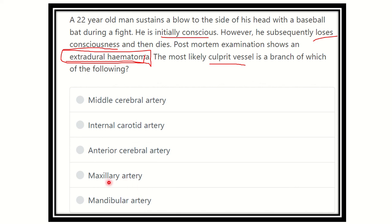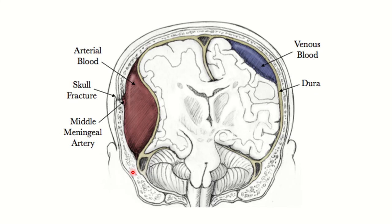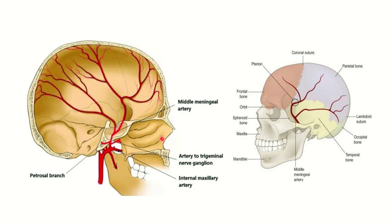We need to find out which artery the culprit vessel branches from. Extradural hematoma means hematoma outside the dura mater, and it is usually caused by tearing of the middle meningeal artery. In the picture, we can see this is the middle meningeal artery, which tears due to a hit in this area.